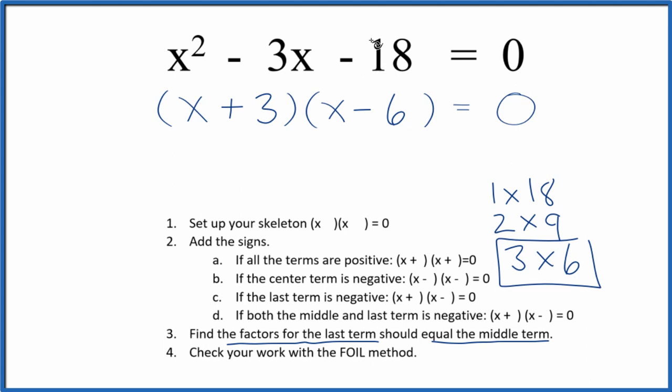So we factored the equation x squared minus 3x minus 18. We should check our work with the FOIL method. We multiply the first terms, the outside, the inside, and then the last.